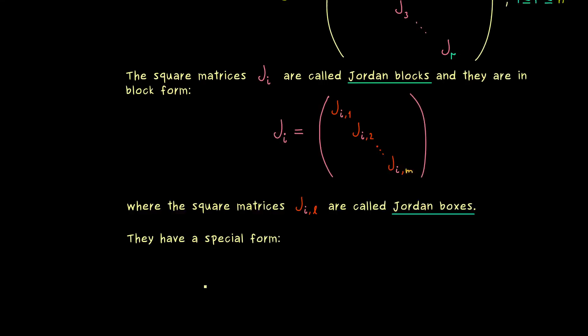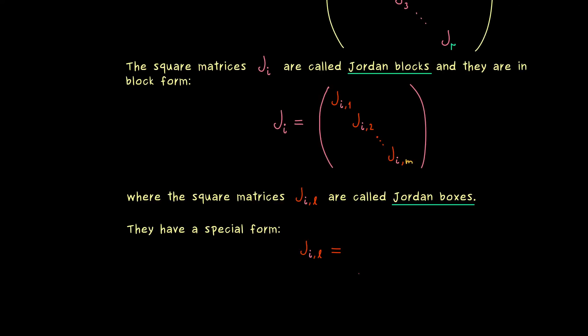And now finally these Jordan boxes have a special form, as we have seen it in our first example before. Namely they have a given eigenvalue on the diagonal and let's call it lambda i. So this means inside a given big Jordan block, we always have the same eigenvalue lambda i.